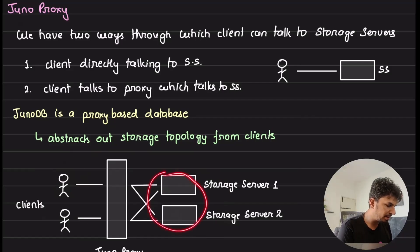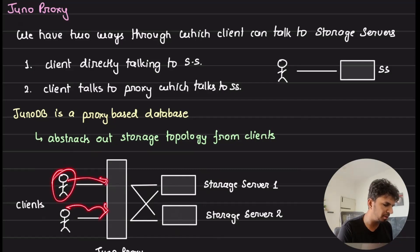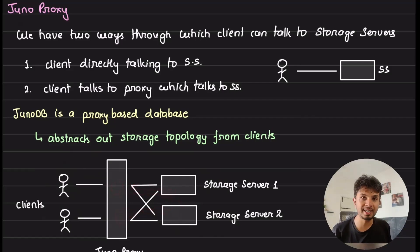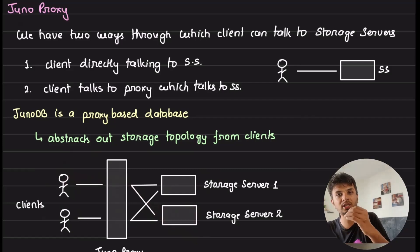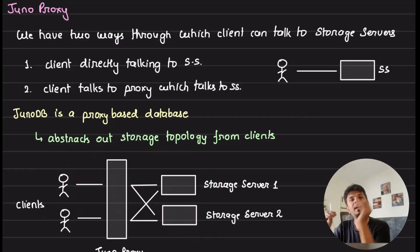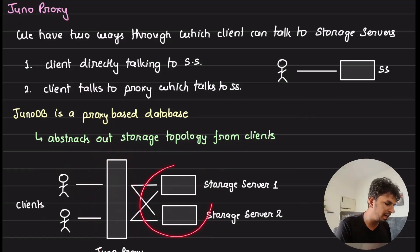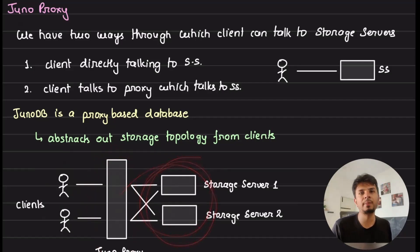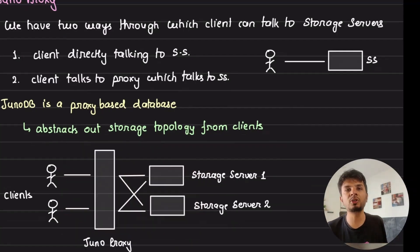The Juno proxy establishes persistent connections to all storage servers. When a request comes in, it figures out which storage server to talk to, forwards the request to that server, which then picks the right shard and writes or reads the data. The proxy layer abstracts out the complexity of storage server topology, giving clients a very simple way to interact with JunoDB.